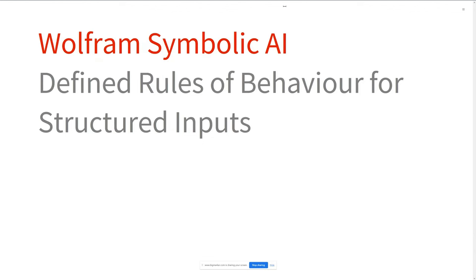Wolfram, for 35 years — and me personally at Wolfram for 32 of those — have been very much concerned with symbolic AI. I define that as having defined rules of behavior for structured inputs. Structured inputs might be something simple like 2 plus 2, where we have an expression and the rules of behavior are addition. There's no guesswork; we know exactly what the rules are and that should equal 4. Those rules scale up to all kinds of arithmetic, but they can also be more complex structured inputs like an image, where the rules might be finding the edges of the contents, or blurring it. These defined rules of behavior tend to be quite deterministic and very easy to describe — quite predictable.